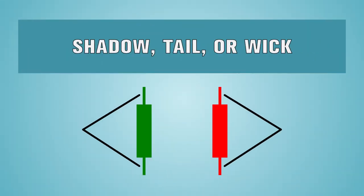The lines showing price excursions above and below the real body are called shadows, tails, or wicks. These show the highest and lowest prices of the period before settling on the close shown by the real body.